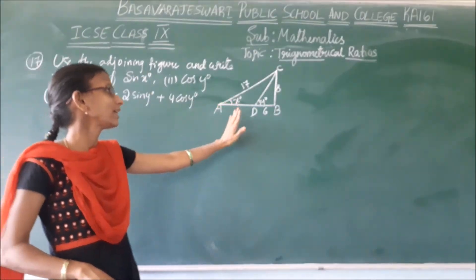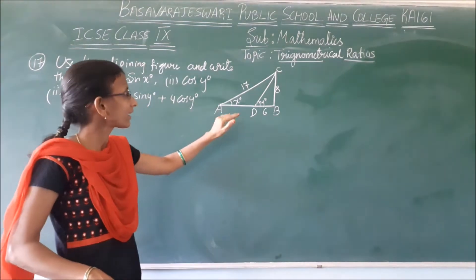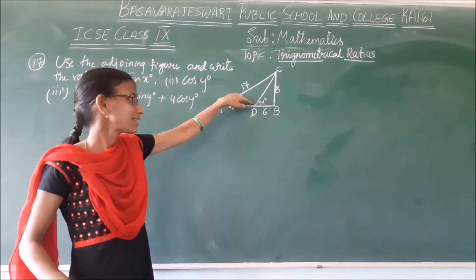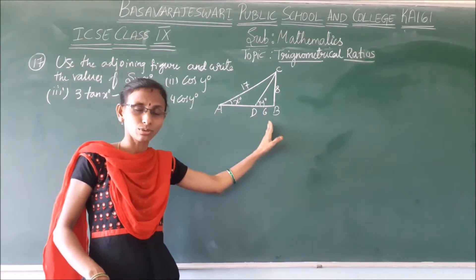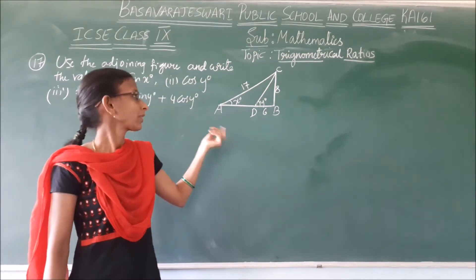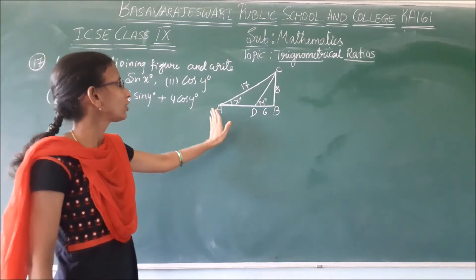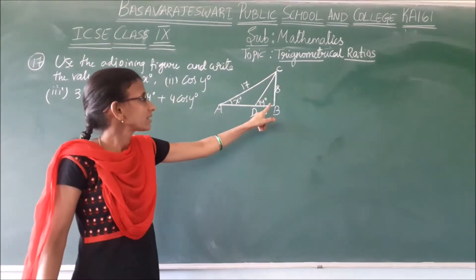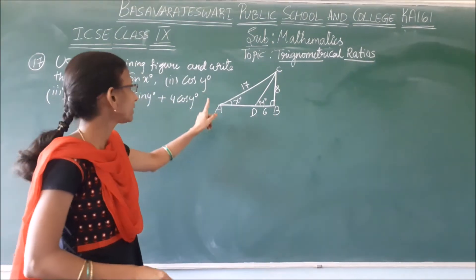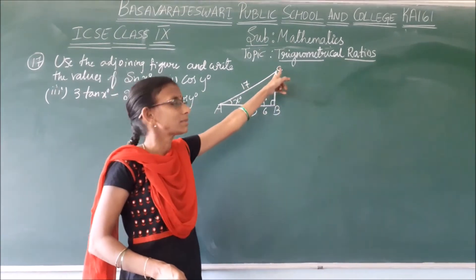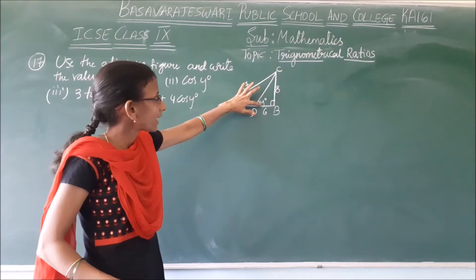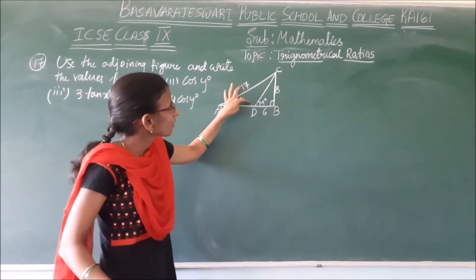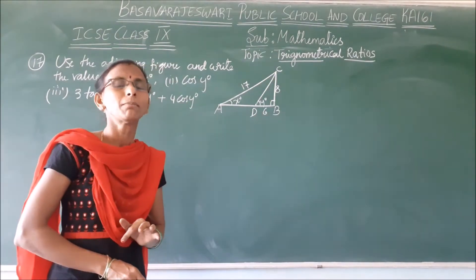By the given figure we have to find the values of sin x and cos y. In order to find this, first we need to find all the sides of the triangles. For triangle CBD, we know two sides and have to find CD. Also, to find sin x, we need AB. In triangle ABC, according to Pythagoras theorem, AC square equals AB square plus BC square. Similarly, in triangle BCD, CD square equals BD square plus BC square.